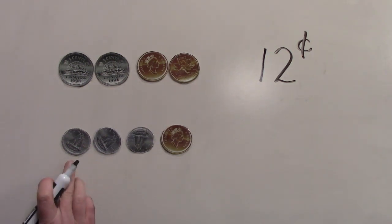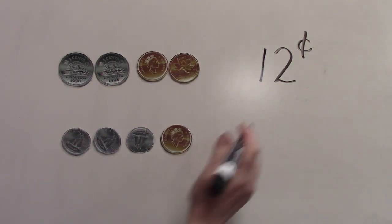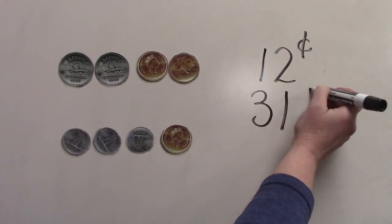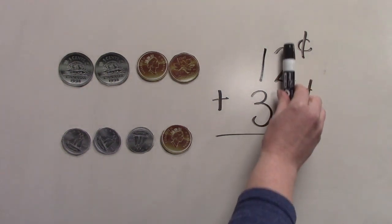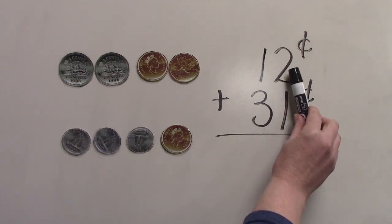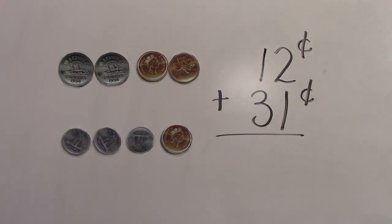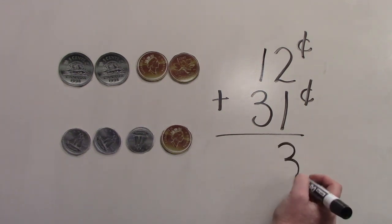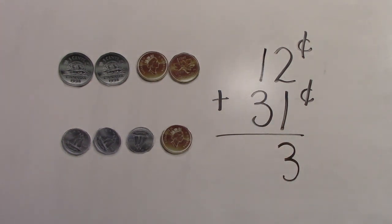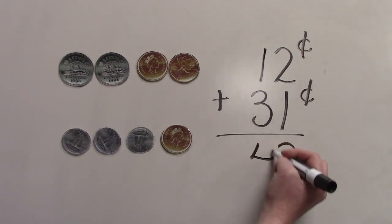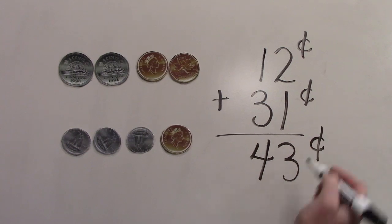On the next row, we have 10, 20, 30, 31. 31 cents. Let's add those two numbers together to see how much money we have all together. We're going to start just adding the numbers in the ones place. We have two plus one. What is two plus one? That's right. It's three. We also have one plus three in the tens place. Let's add those together. One plus three is four. We have 43 cents all together.